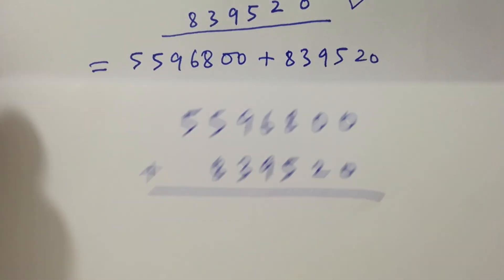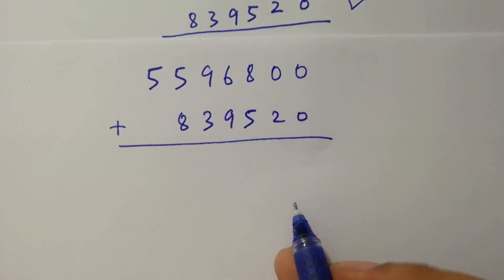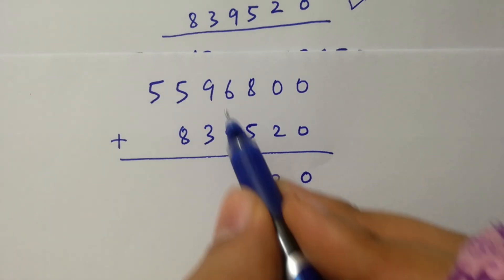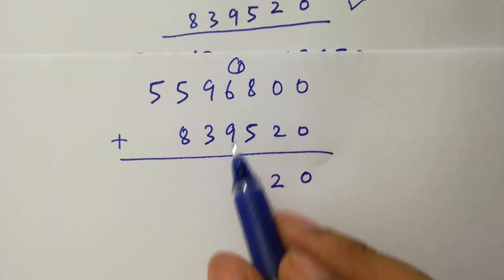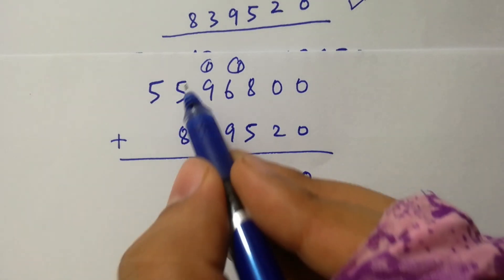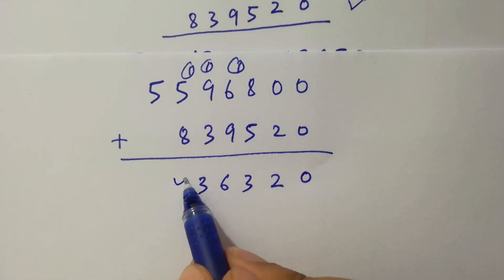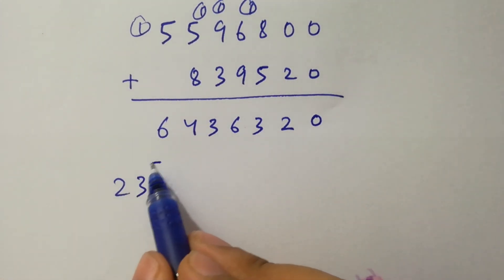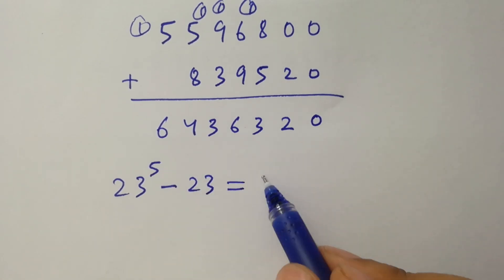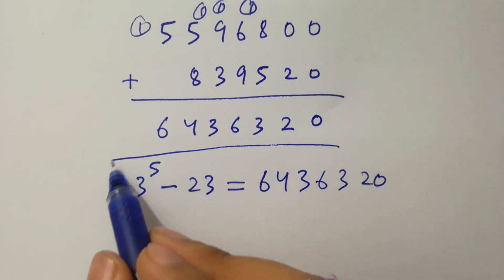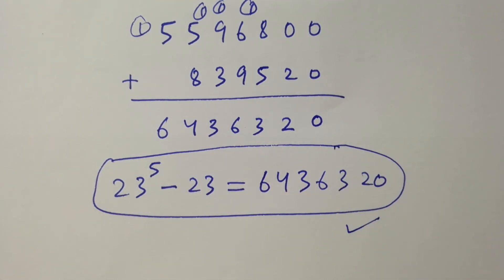Adding 5,596,800 and 839,520: 0 plus 0 is 0, 0 plus 2 is 2, 8 plus 5 is 13 (write 3 carry 1), 6 plus 9 plus 1 is 16 (write 6 carry 1), 9 plus 3 plus 1 is 13 (write 3 carry 1), 5 plus 8 plus 1 is 14 (write 4 carry 1), 5 plus 1 is 6. So 23 to the power 5 minus 23 equals 6,436,320. That's our final answer. Thanks for watching this video, please subscribe to this channel to get notifications of new videos.